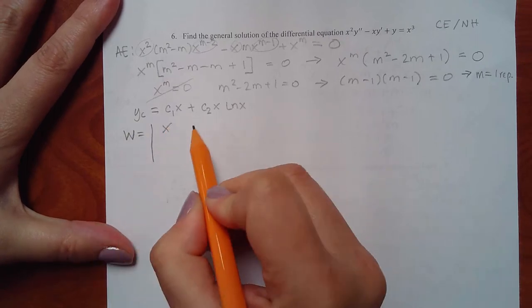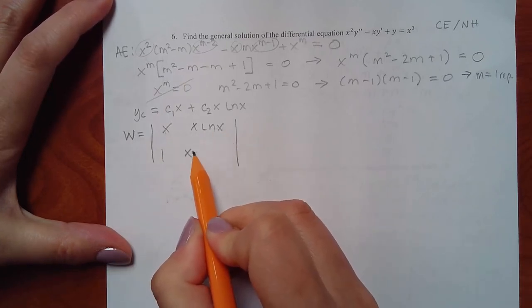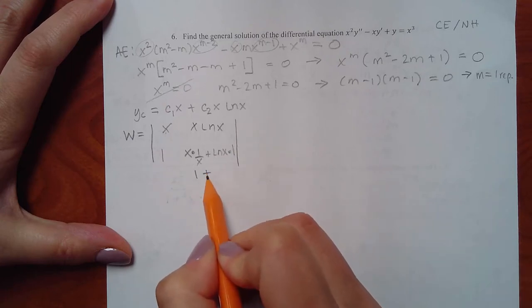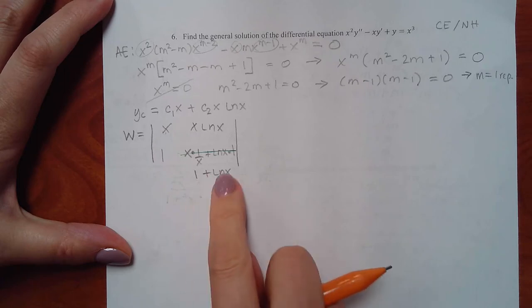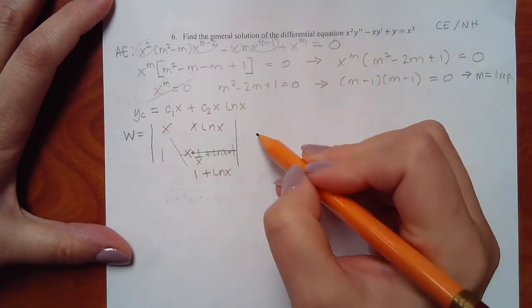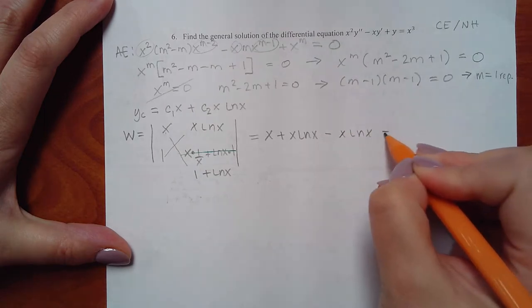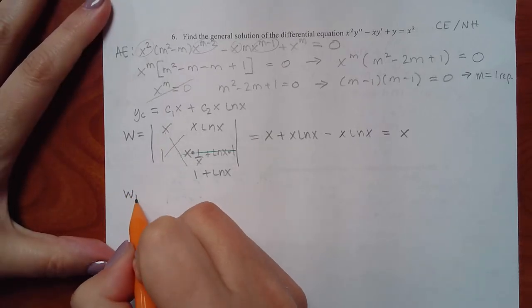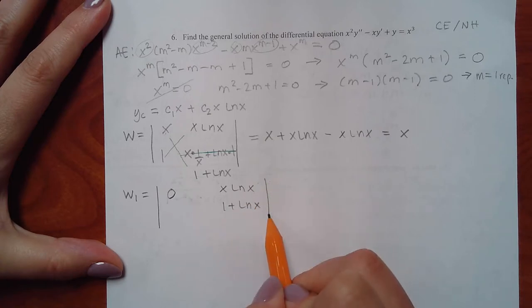Setting up the Wronskian with y1 = x and y2 = x·ln(x). Derivative of x is 1; derivative of x·ln(x) by product rule is x times 1/x plus ln(x) times 1, giving 1 plus ln(x). Computing the determinant: x(1 + ln x) minus x·ln(x) = x + x·ln x minus x·ln x = x. Those ln(x) terms cancel — lucky, since dividing by ln(x) would have been ugly. So W equals x.